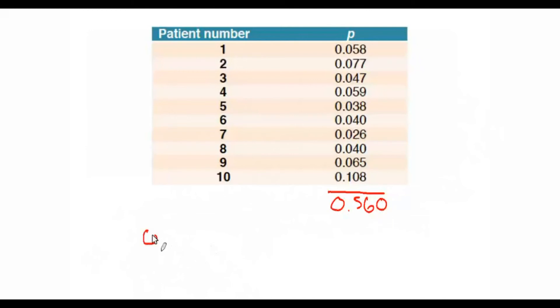And our observed-to-expected ratio is the observed 2 readmissions over 0.560, which is equal to 3.57.